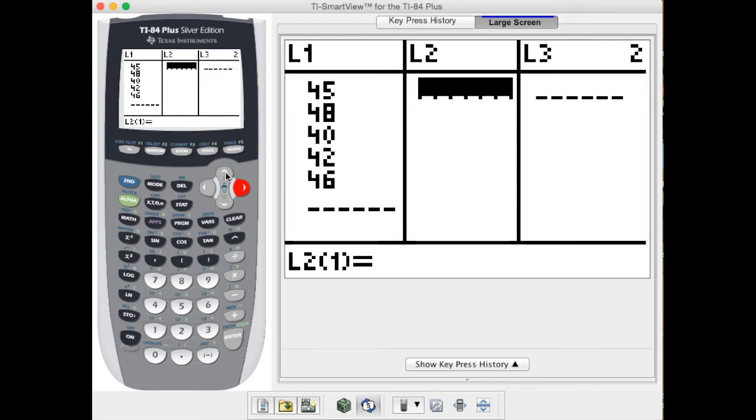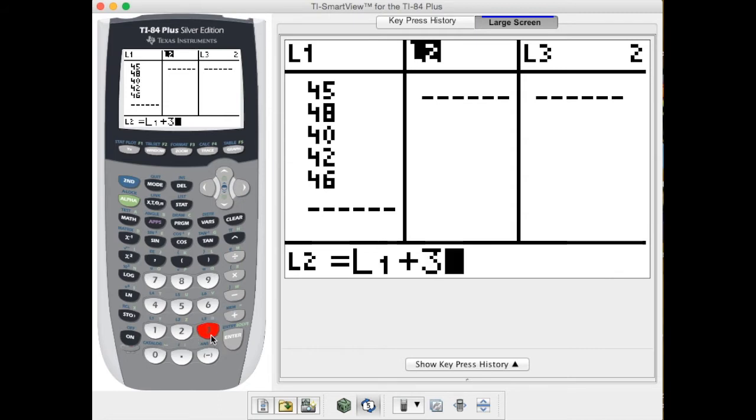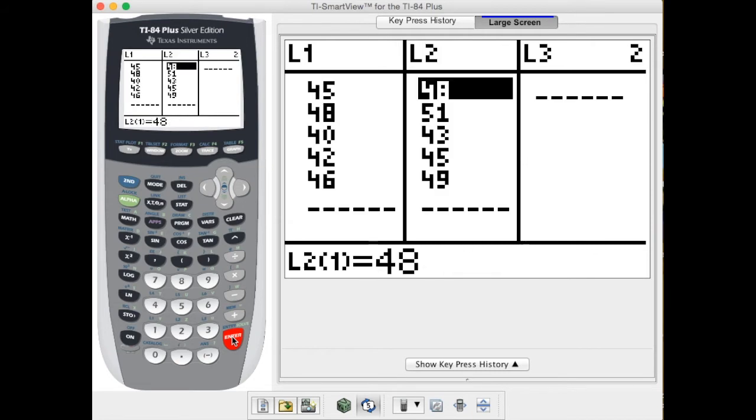The easy way to do it would be to highlight list two, hit the second one key for L1, and then plus three. This tells me that I want to add three to each value in list one. When I hit enter it will automatically do that for me.